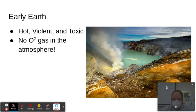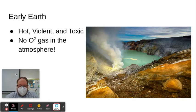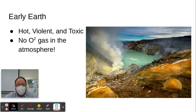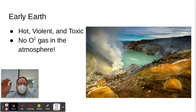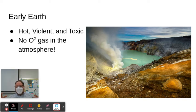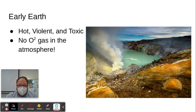What was life like on early Earth? Not very hospitable to life as we imagine it today. At the beginnings of life on Earth, the atmosphere was substantially different than it is now. There was no free oxygen in the atmosphere, and lots of other compounds that would have made it toxic to life. Additionally, land masses were being formed, and there were volcanic eruptions, so it was a rough, violent place.